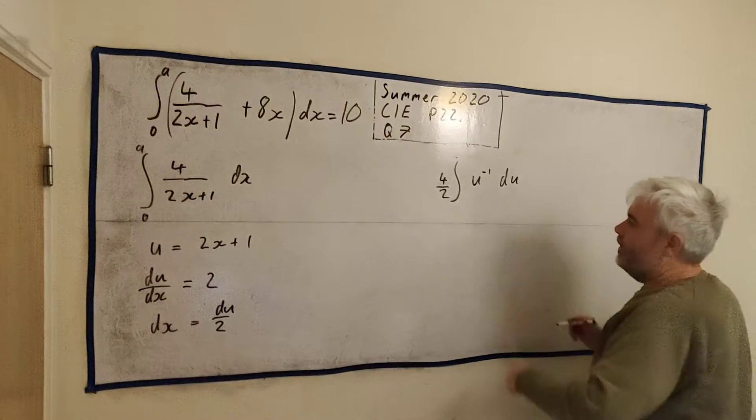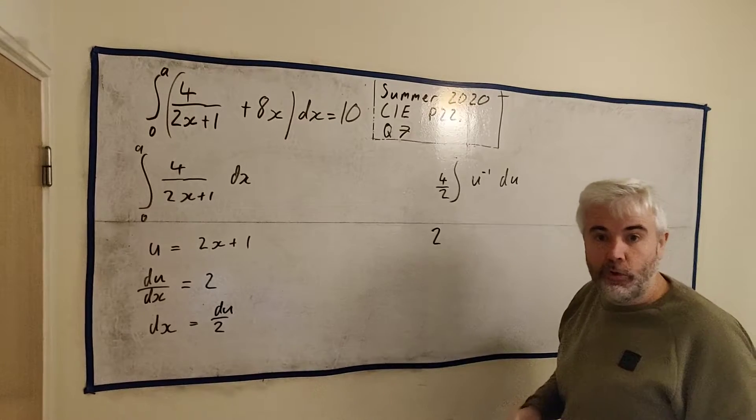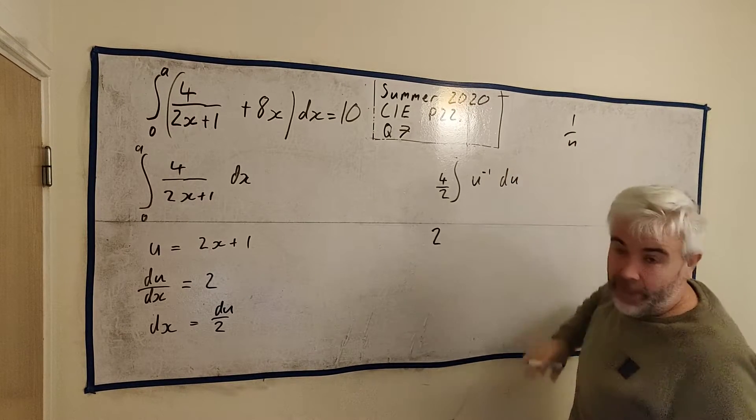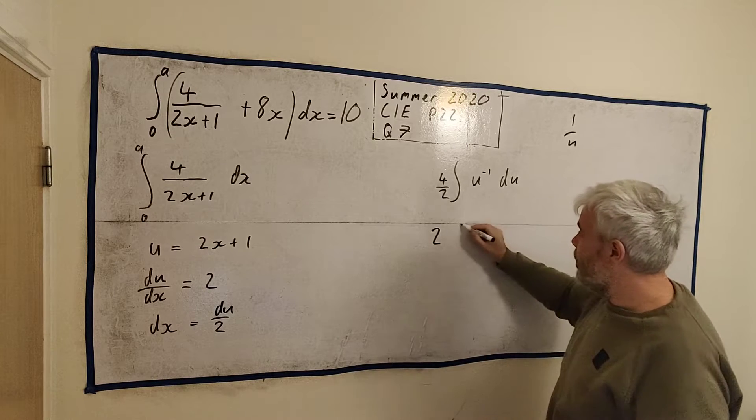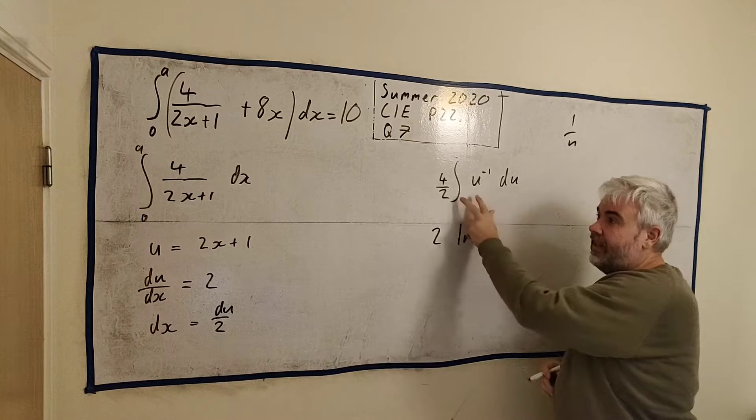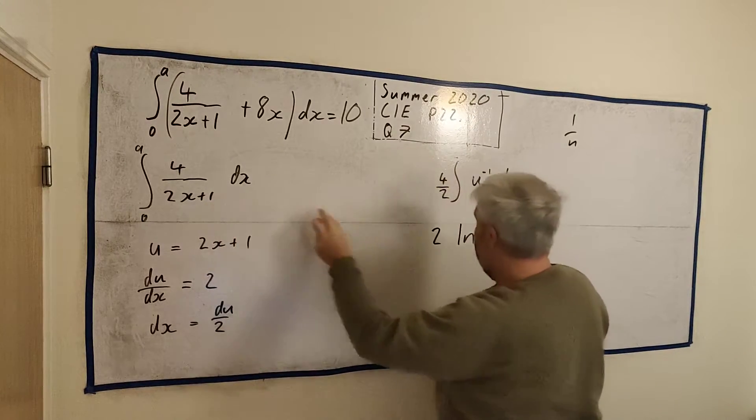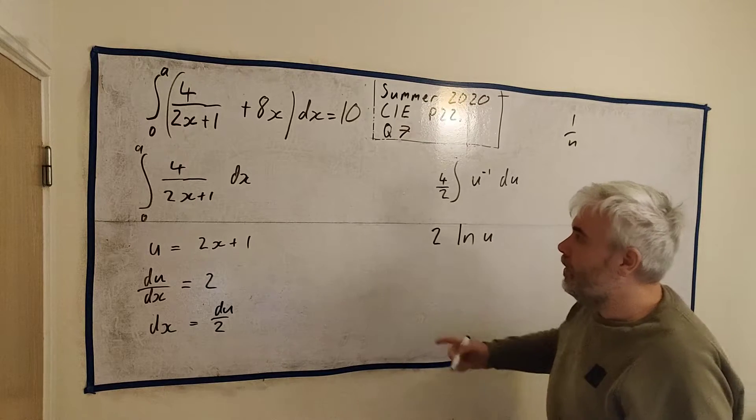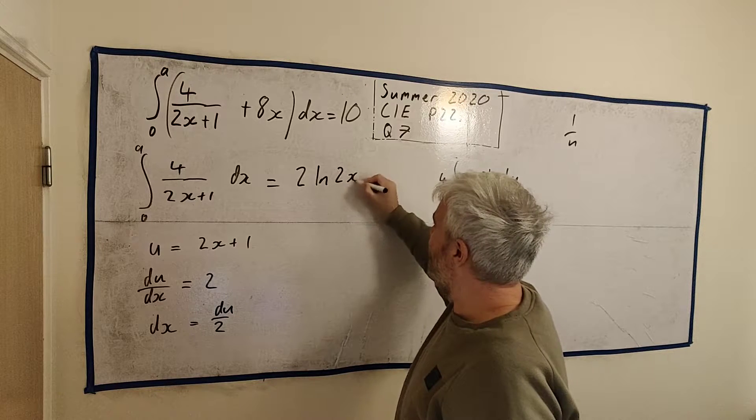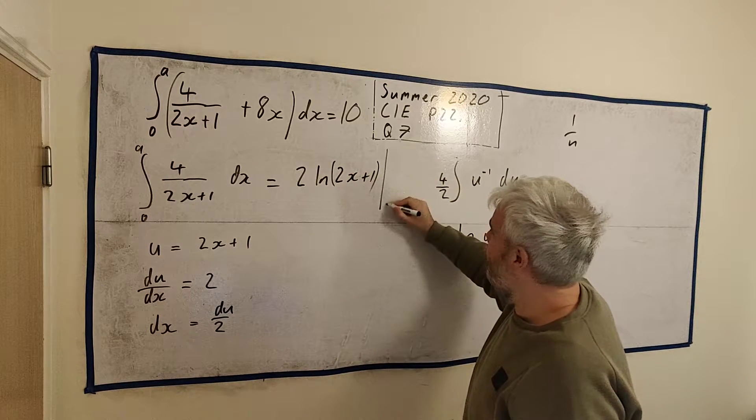So this question is the same as this one. One important thing to notice, I haven't put 0 and a here because it's not 0 and a anymore. It's a waste of time. Don't do that. You don't need to do that for this question because we can just change it back into x when we're finished and then use 0 and a.